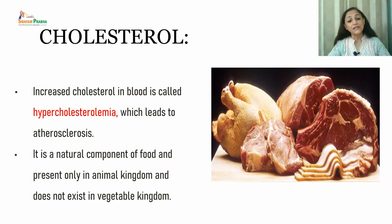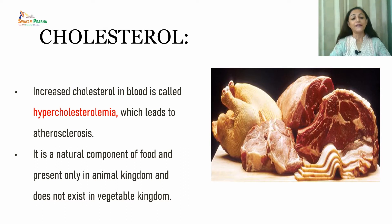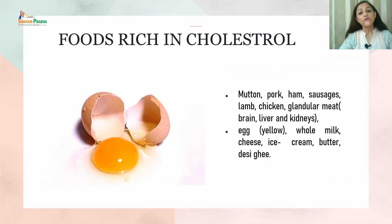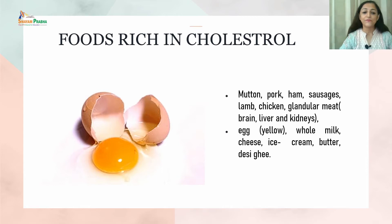Increased blood cholesterol, known as hypercholesterolemia, leads to atherosclerosis. Cholesterol is a natural component found only in the animal kingdom; plants do not contain cholesterol. Foods rich in cholesterol include mutton, pork, ham, sausages, lamb, chicken, glandular meats such as brain, liver, and kidneys, egg yolk, whole milk, cheese, ice cream, butter, and desi ghee.